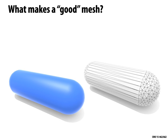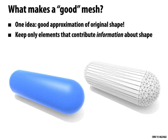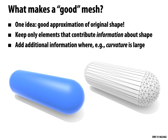So how do we know when we have a good sampling? One reasonable idea is that a good mesh provides a good approximation of the original shape — keeping only elements that contribute useful information. For example, a cylindrical tube with spherical end caps needs more vertices at the curved end caps and can get away with fewer in the straight middle section. This is a pretty efficient approximation of the original shape.